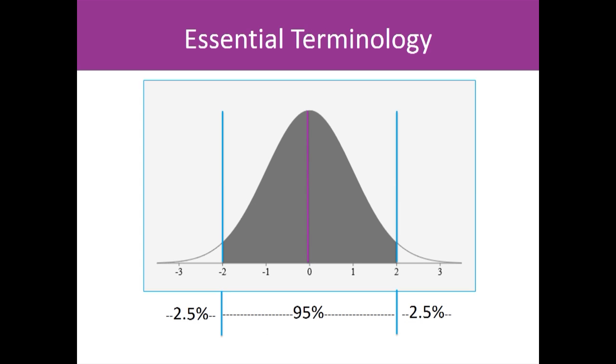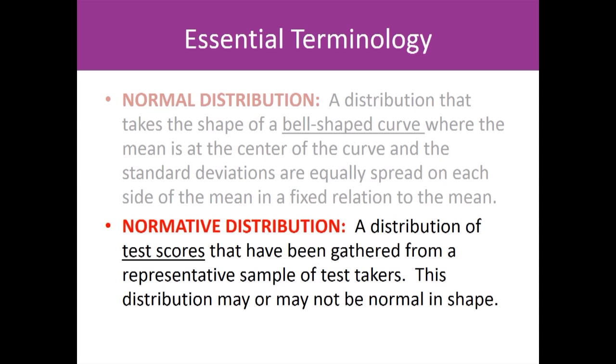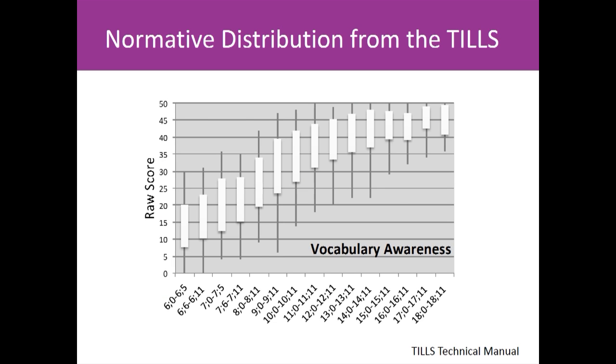Two standard deviations accounts for 95 percent of all scores. Only 2.5 percent of scores lie below negative 2 standard deviations and 2.5 percent lie above positive 2 standard deviations. The second piece of essential terminology is normative distribution. The similarity between the terms normative distribution and normal distribution can be a source of confusion. They are not the same thing. A normative distribution is a distribution of test scores that have been gathered from a representative sample of test takers. This distribution may or may not be normal in shape.